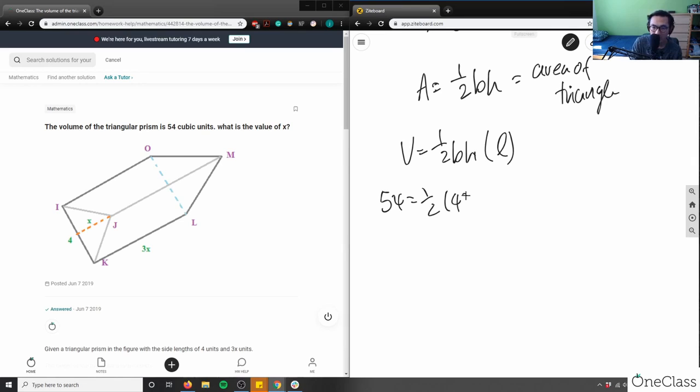The height, I don't know, right? I know it's x. And then my length here is KL, which is 3x. So 3x.